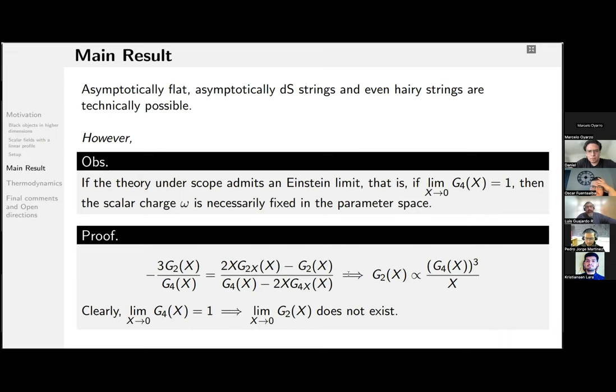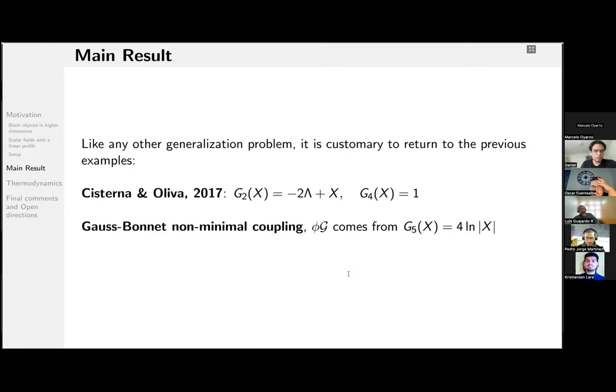Okay. Well, like any other generalization problem, it is always customary to return to the previous examples. So the Cisterna-Oliva string just follows from fixing G₄ = 1 and G₂ is the cosmological term, plus the kinetic term. And the Gauss-Bonnet non-minimal coupling follows for a specific choice of G₅. However, as we stated before, when you impose the linear profile for the scalar field, the function G₅ is something like zero. It's not included in general in the general model because of parity symmetry.